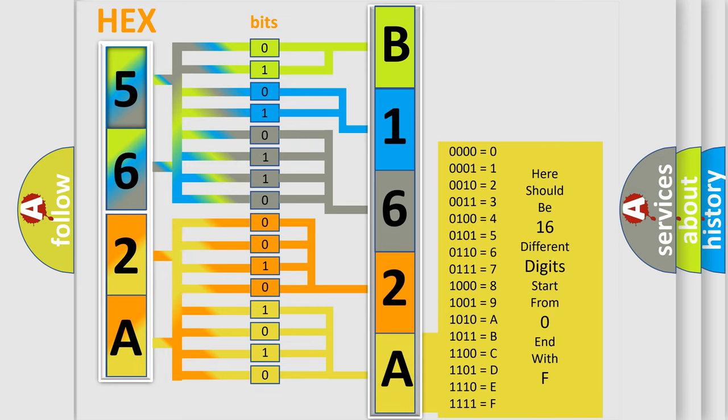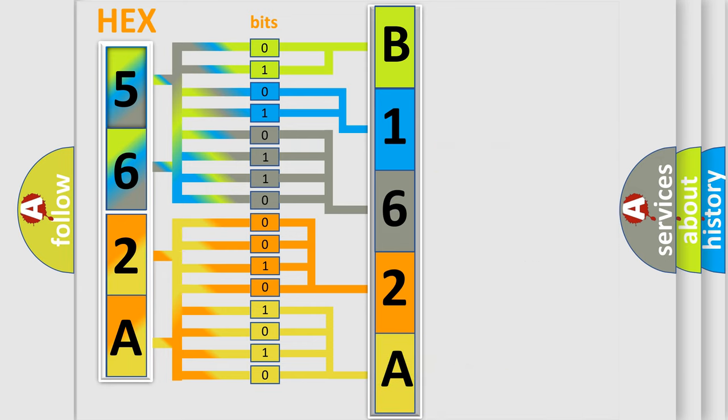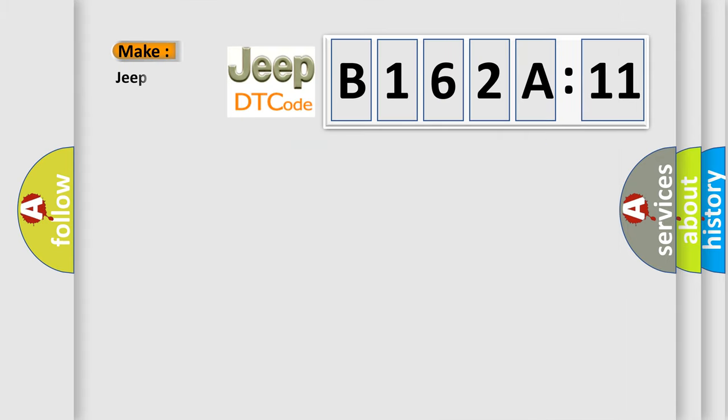We now know in what way the diagnostic tool translates the received information into a more comprehensible format. The number itself does not make sense to us if we cannot assign information about it to what it actually expresses. So, what does the diagnostic trouble code B162A11 interpret specifically?